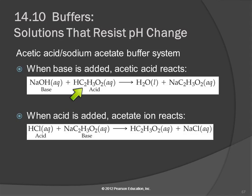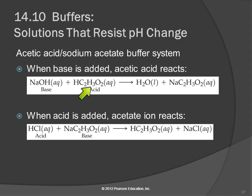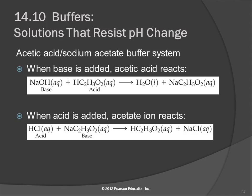Because if this were a strong acid, it would dissociate completely and there would be no more acid left. We need to have this molecule intact. So if we add base like sodium hydroxide to this system, the acetic acid will react with it and neutralize it — you'll get water and sodium acetate. If you add acid to this combination, the sodium acetate is the conjugate base of the weak acid, and that reacts with the acid and neutralizes it.